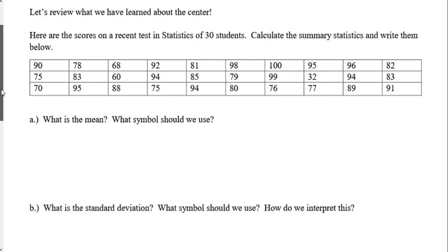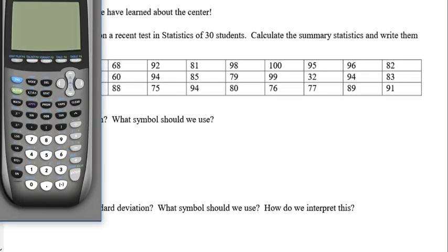So we're going to pull up our handy-dandy calculator. We turn it on, we go to stat, we hit enter on edit. Now, we want all these numbers gone. You go up to L1. Do not hit delete. You will delete the column. You hit clear, and you just come on back down, and it's empty. You clear the list. You don't want to delete the list.